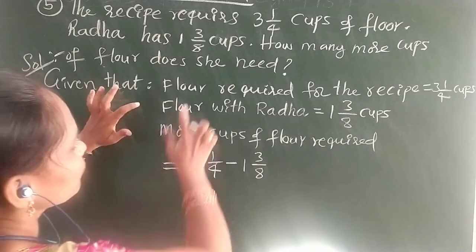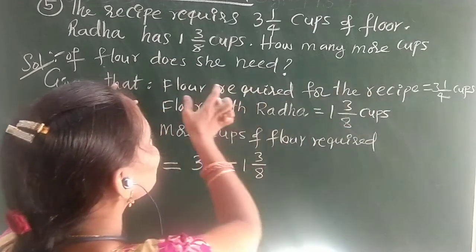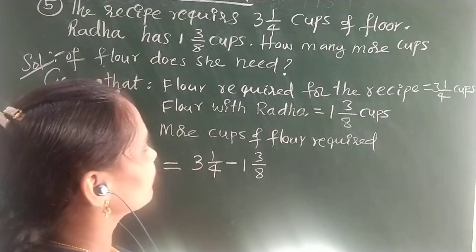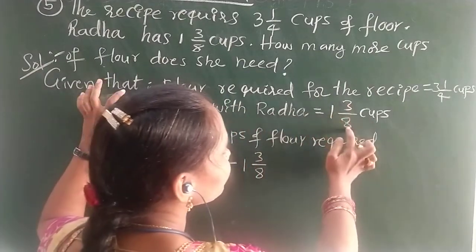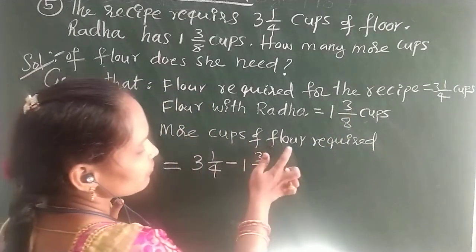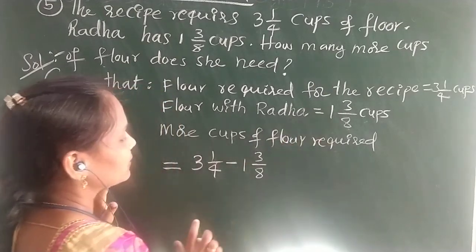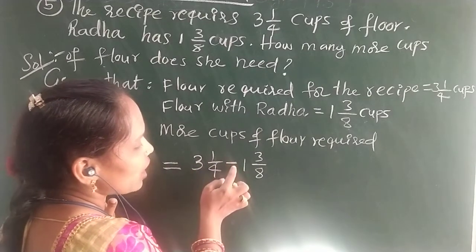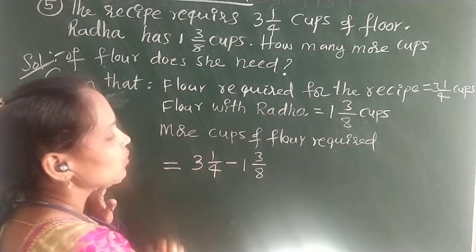Given that flour required for the recipe, for 1 recipe, how much flour required? How many cups of flour? 3 1/4 cups of flour it requires. Flour with Radha, Radha how much it is having? 1 3/8 cups she is having. More number of flour cups we need to find out. From total cups of flour, you have to subtract the number of cups with Radha.